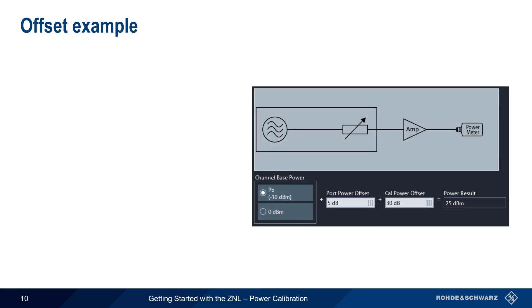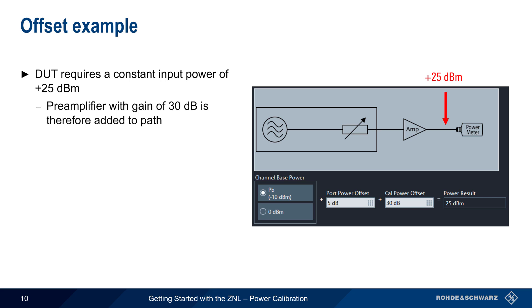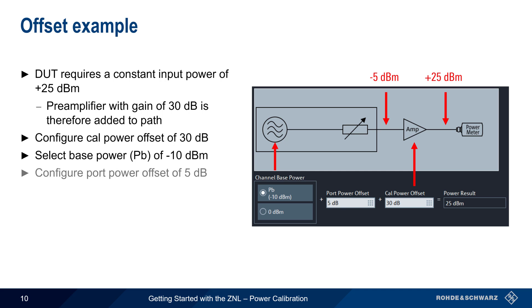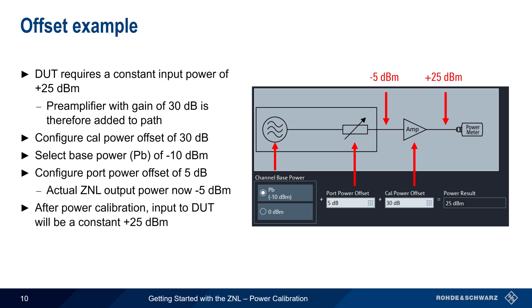Let's walk through an example using offsets. Here, our device under test requires a constant input power of plus 25 dBm. In order to reach this level, a preamplifier with a gain of 30 dB is placed between the ZNL and the device. We start by configuring a CalPower Offset of 30 dBm to match the gain provided by the preamp. In order to obtain plus 25 dBm at the DUT, the input to the preamp — that is, the output power of the ZNL — must be minus 5 dBm. We therefore set the ZNL base power to minus 10 dBm and set the Port Power Offset to 5 dB, so that the actual ZNL output power is minus 5 dBm. Once power calibration is completed, the input to the device under test will be minus 5 plus 30, or plus 25 dBm.